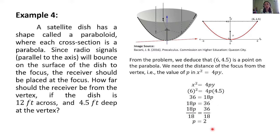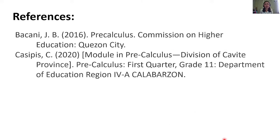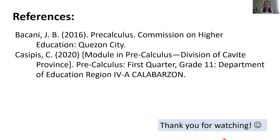Thus, the receiver should be 2 feet away from the vertex. Doon natin ilalagay yung ating receiver — doon sa mismong focus, kasi doon magbabounce yung ating radio signals. Again, mahalaga itong conclusion kasi ayan yung sasagot doon sa hinihingi sa problem: how far should the receiver be from the vertex if the dish is 12 feet across and 4.5 feet deep at the vertex? The receiver should be 2 feet away from the vertex. So, with that class, here's the list of references that we used in creating this video tutorial. Sana meron tayong mga bagong natutuhan sa video na ito. Thank you all for watching. Bye-bye!